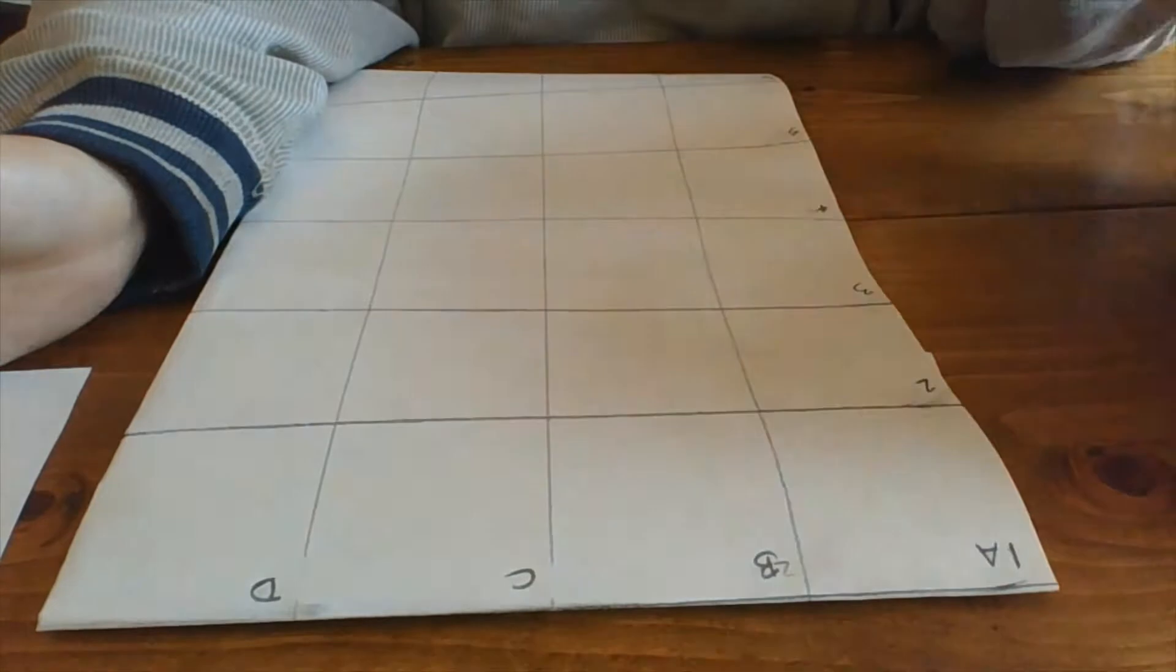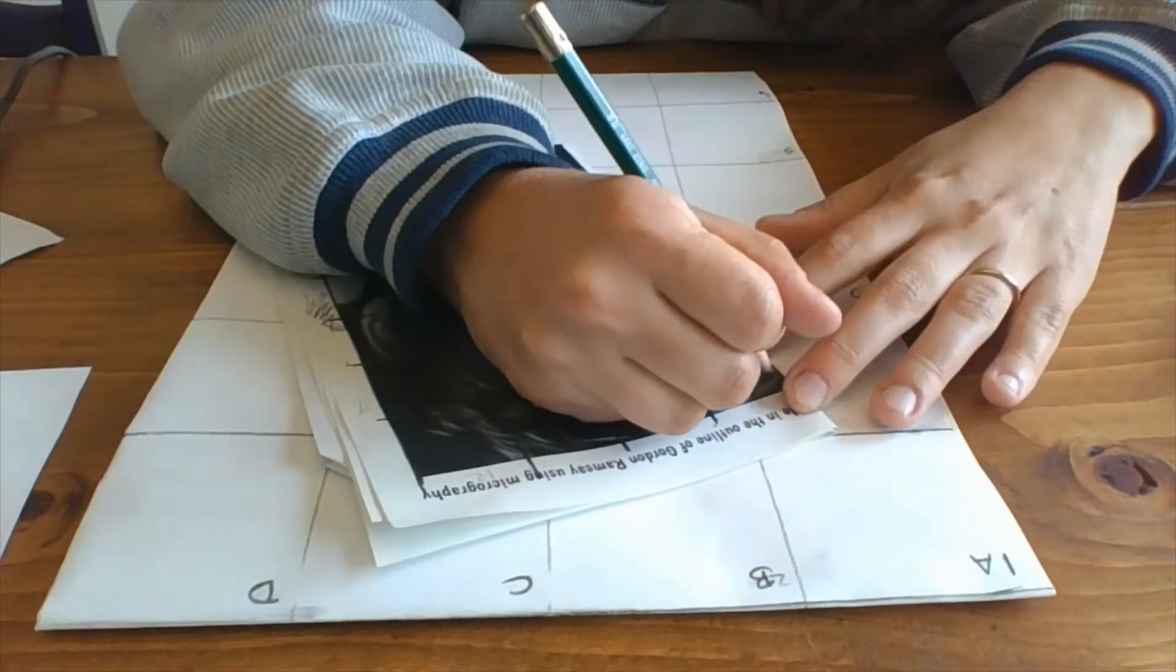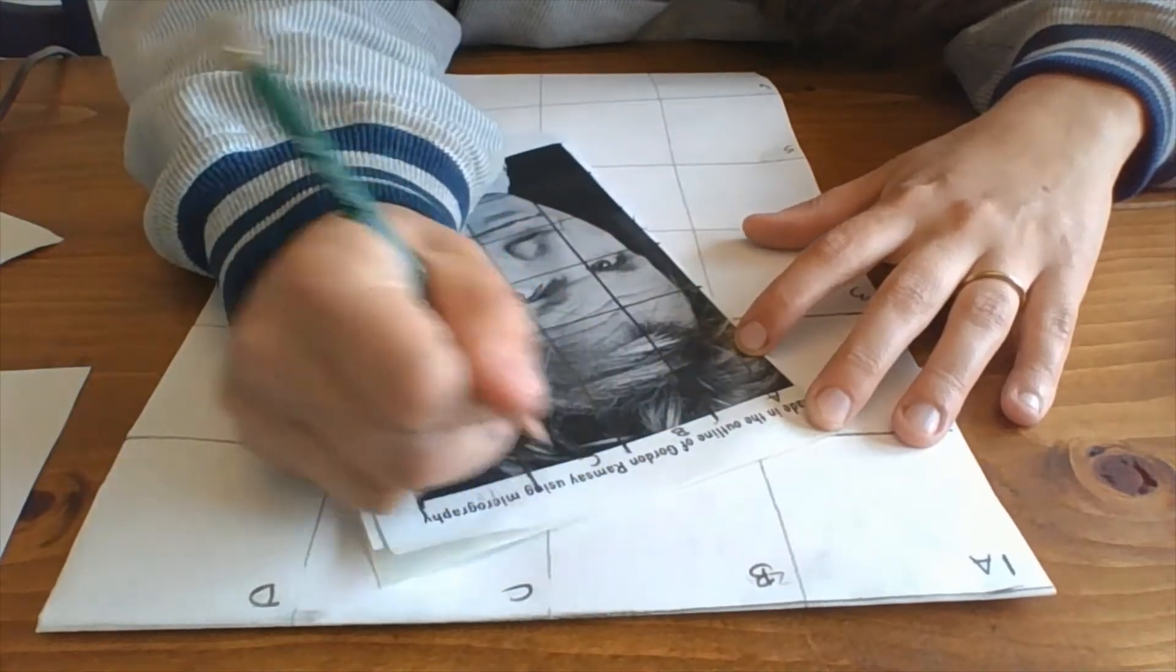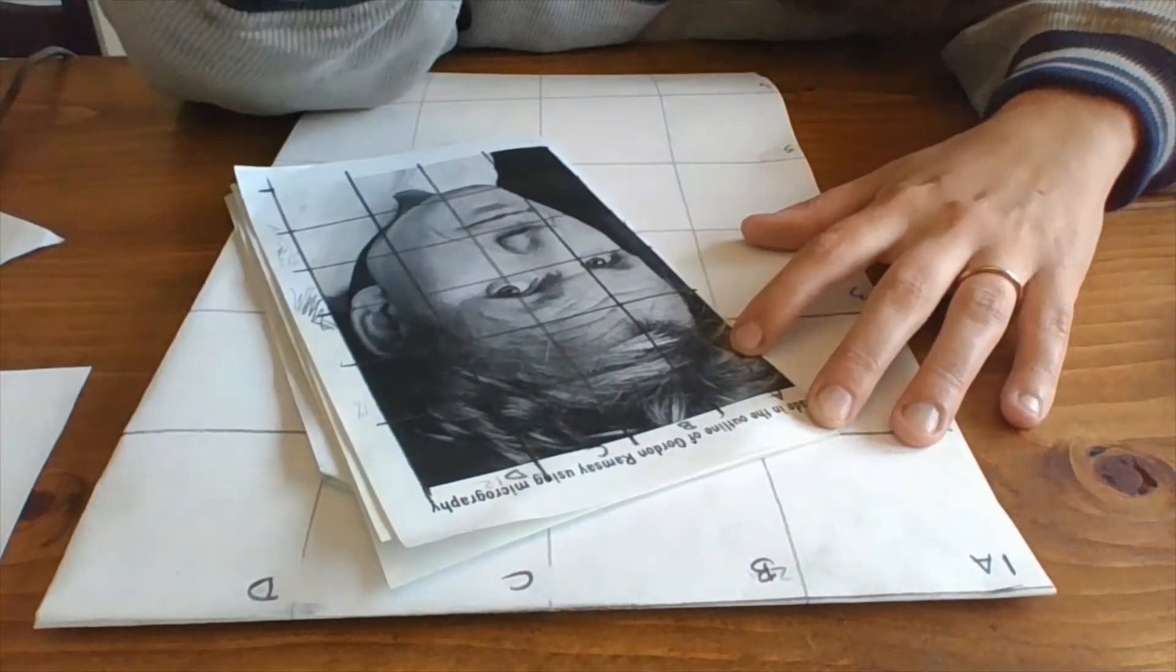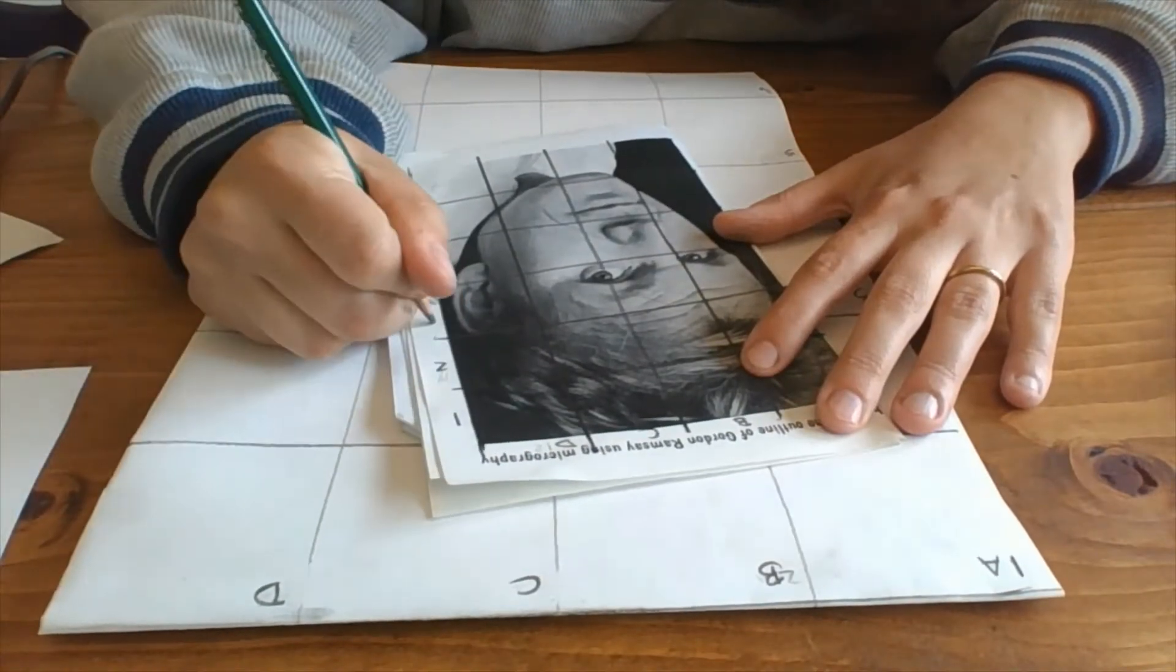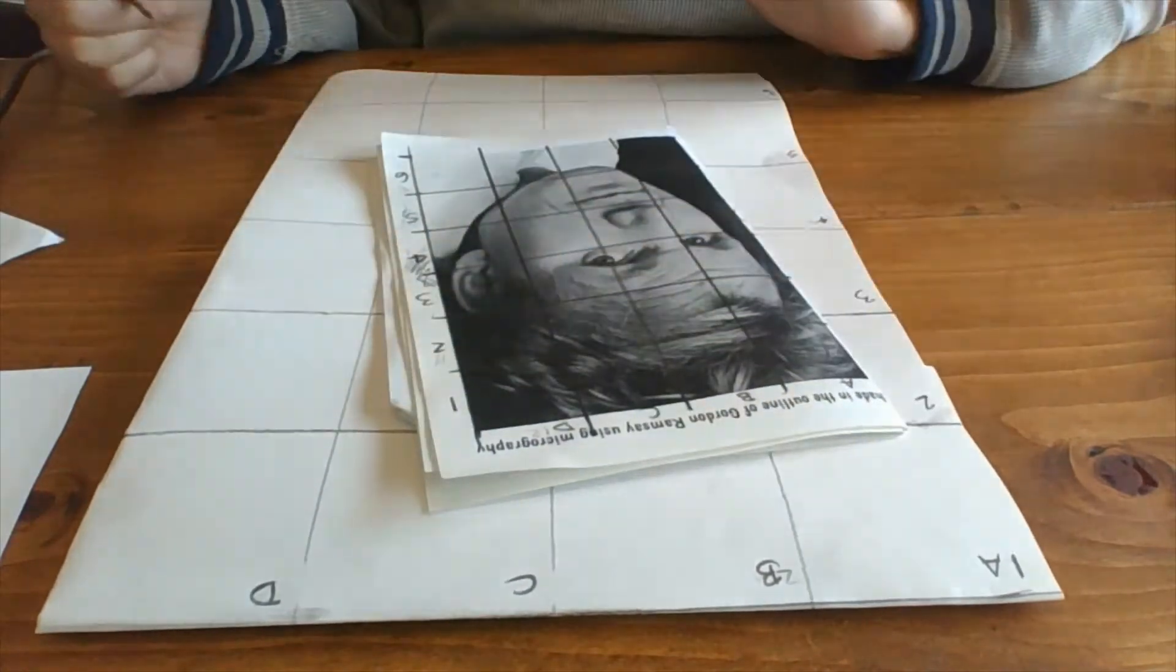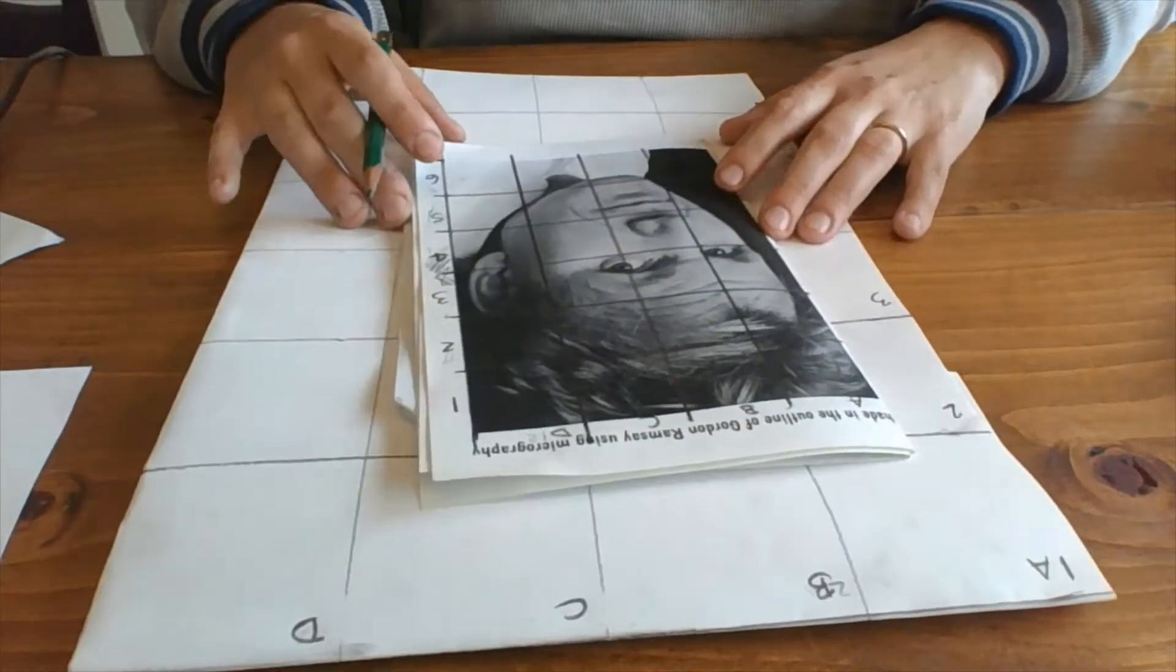And in order to make this work, we also want to label our photo. So we're going to go A, B, C, D, and one, two, three, four, five, and six. That's just going to help you keep track of where things are.